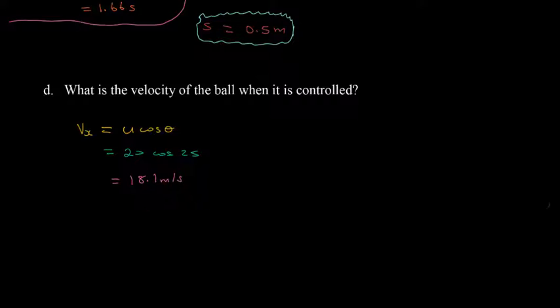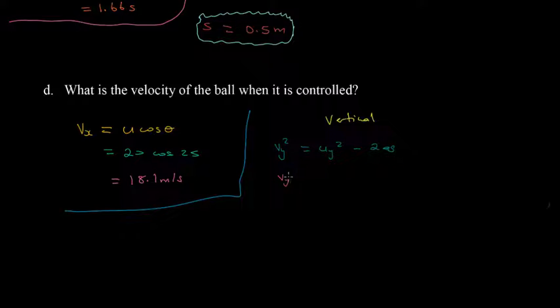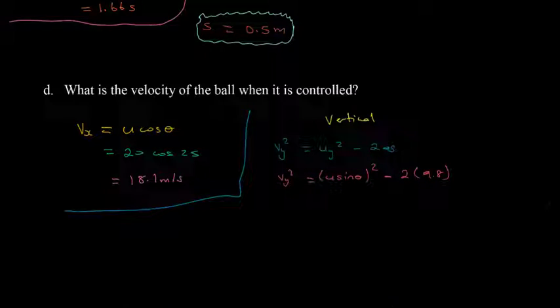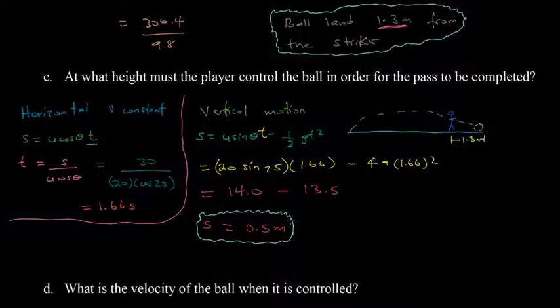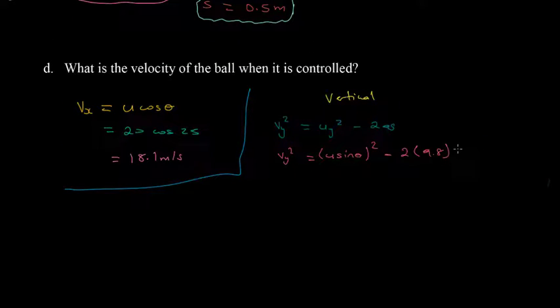Now, for the vertical now, so this was the horizontal here. For the vertical now, we will consider that Vy squared is equal to Uy squared minus 2As, where A is our acceleration due to gravity. So this number becomes Vy squared is equal to Uy is U sine theta. And we're taking the square of that minus 2 times A, which is 9.8. And S is our vertical displacement. So we just found out the vertical displacement as 0.5. So we're going to have this as 0.5.